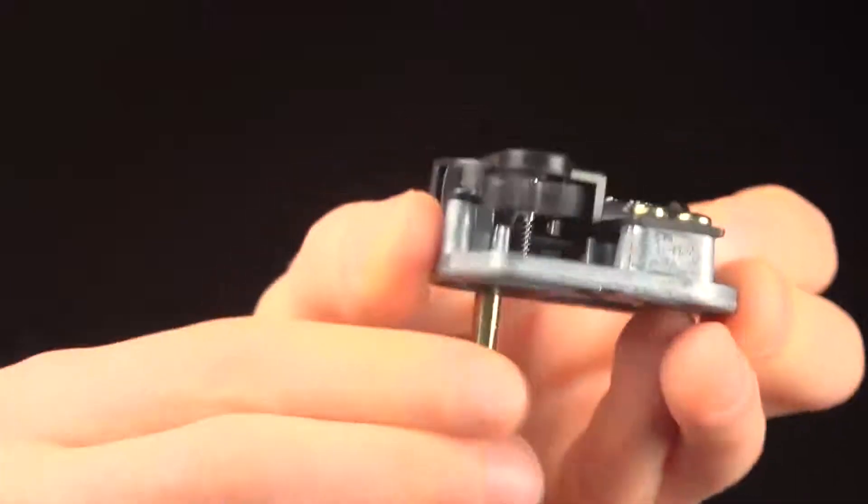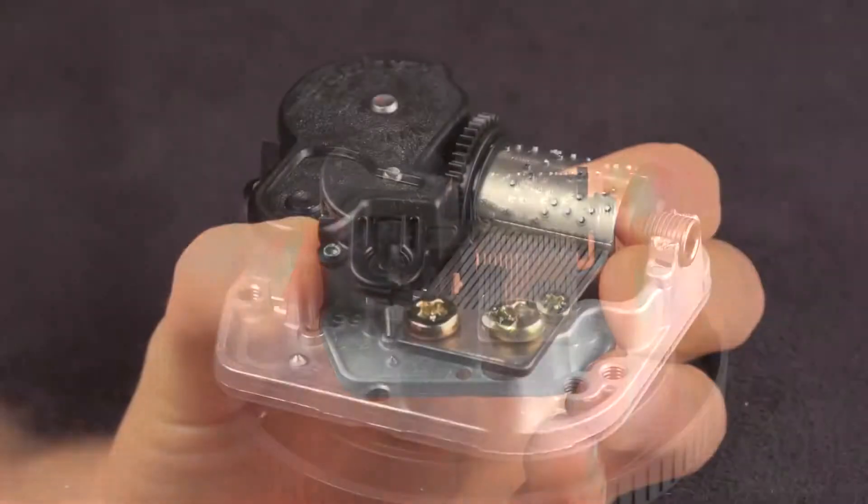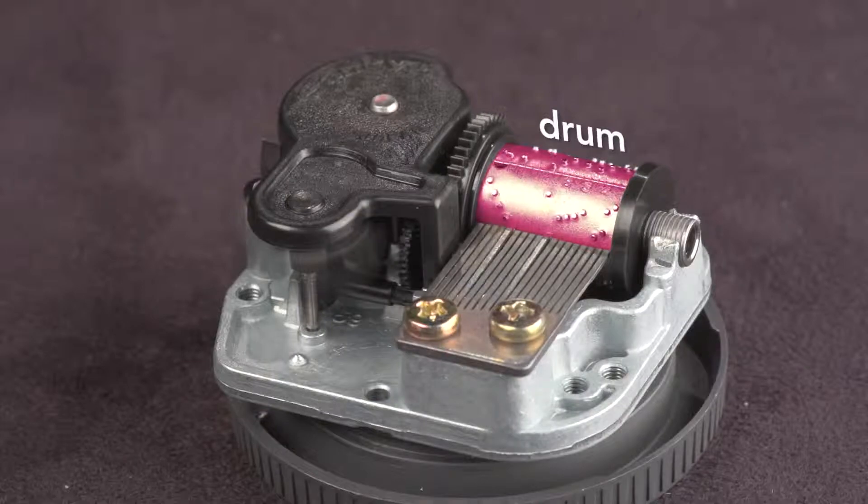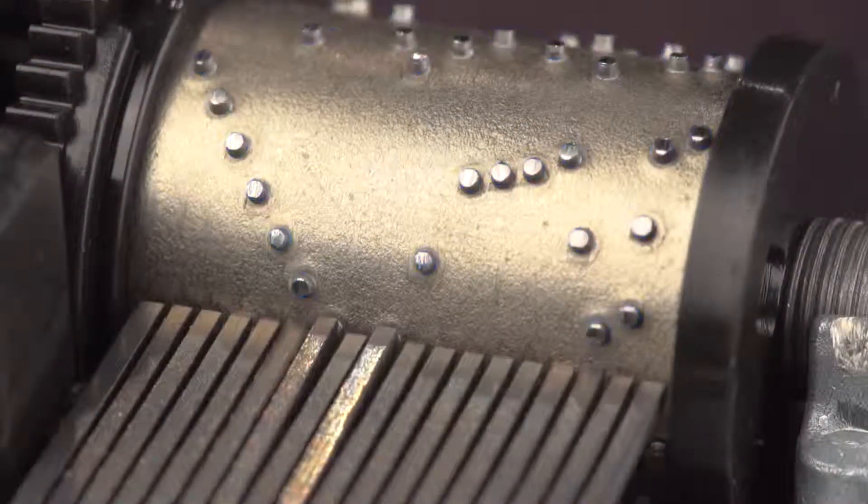I'm sure you know how it works. Wind it up, and it plays a tune. The melody is programmed on this rotating drum. The drum has protrusions called pins that pluck the teeth of the comb.